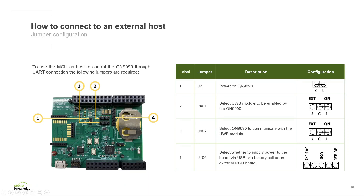To configure the Shield 2 to be driven by an external host through the UART connection, the following jumpers need to be configured. The J2 needs to be set as it is powering the QN1990 on. The J401 jumper needs to be set in position 1C, because it is selecting the UltraWideBand module to be enabled by the QN1990. The J402 jumper needs to be set in position 1C as well to communicate with the UltraWideBand module; by doing so, the UltraWideBand signals will be routed to the QN1990. Finally, the J100 will select whether to supply power to the board via USB, battery cell, or an external MCU board.